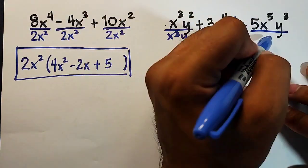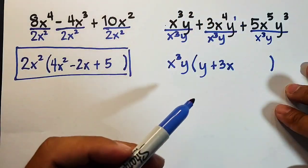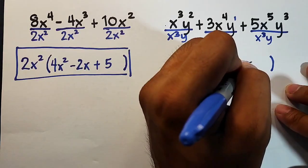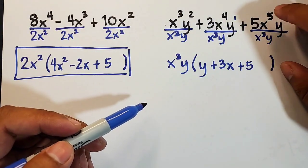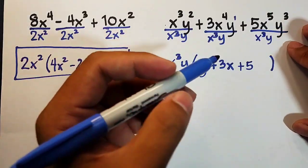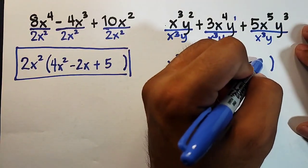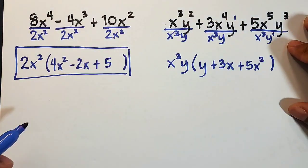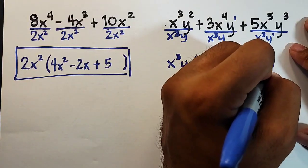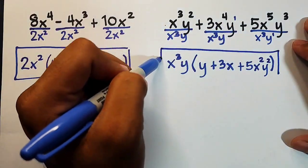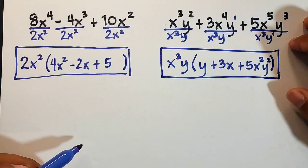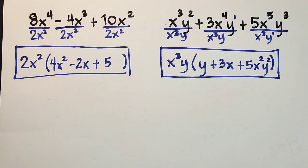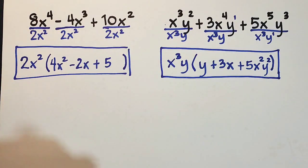Next, divide this by x³y. The number is 5 divided by 1, plus 5. For the variable x, x⁵ over x³ - subtract 5 minus 3 - that's 2, so x². For the variable y, y³ divided by y is y², 3 minus 1. So these are now the factors of item number 2: x³y(y + 3x + 5x²y²). Let's move on with the next problem.